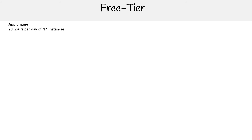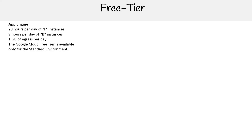For App Engine, you get 28 hours per day for F instances, nine hours a day for B instances, and one gigabyte of egress — that's data leaving the network, like downloads. The Google Cloud free tier is available only for the standard environment, not the flexible environment.